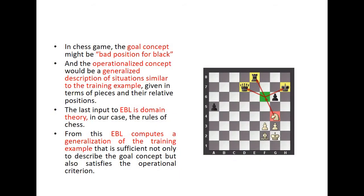In a chess game, the goal concept might be 'bad position for black.' The operationalized concept would be a generalized description of a situation similar to the training example, given in terms of pieces and their relative positions. The last input to EBL is the domain theory — in our case, the rules of the chess game.